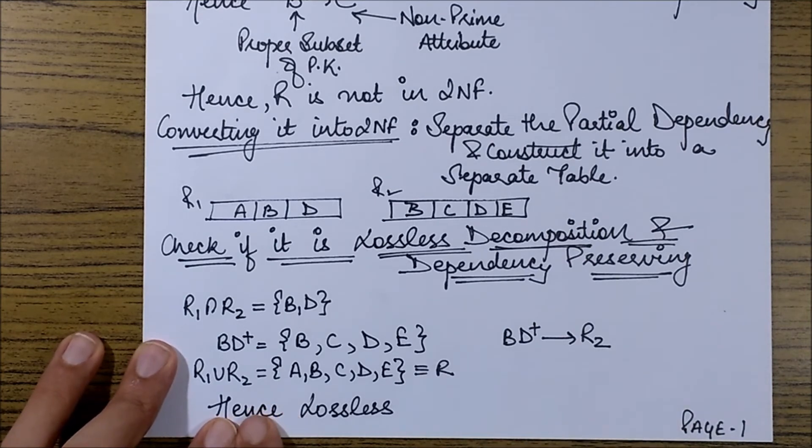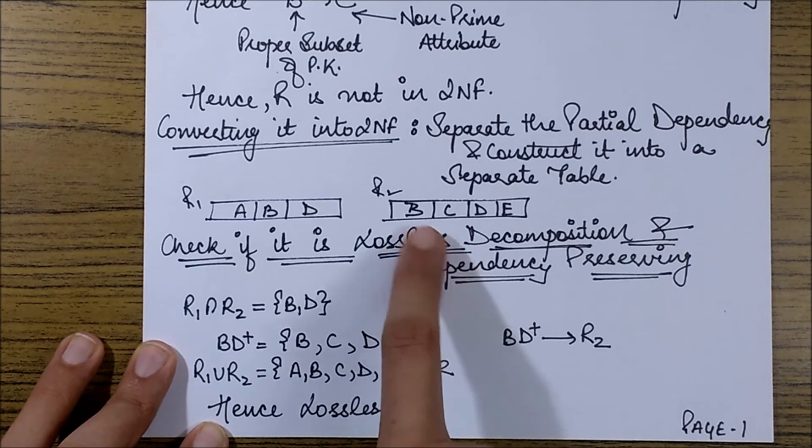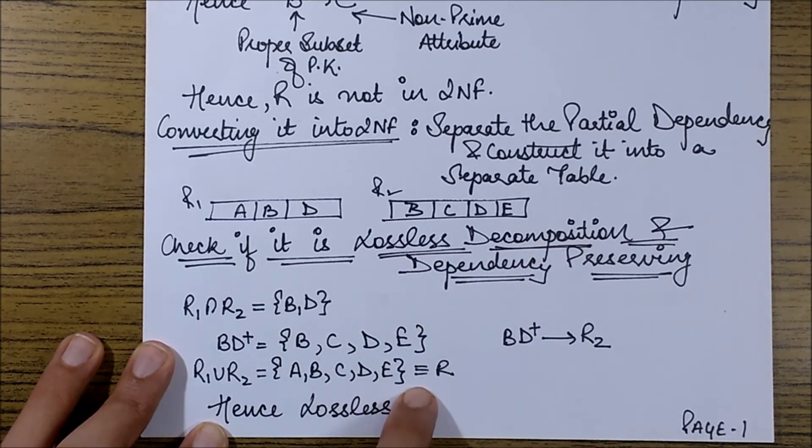Now I check the union condition. Clearly R1 union R2 is giving me all the attributes A, B, C, D, E which is equals to R. Hence it is lossless. So lossless check is performed. It is lossless.